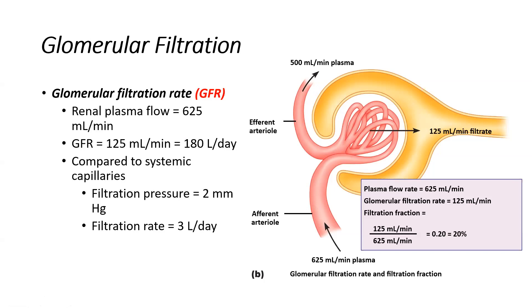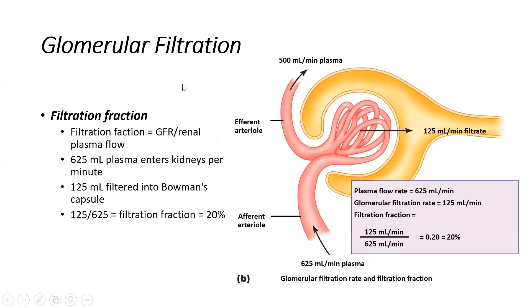From that understanding, we can speak about our filtration fraction. We want to compare that first to what our systemic capillaries look like. In our systemic capillaries, we had a net filtration pressure of 2 millimeters of mercury and a filtration rate of about 3 liters per day — recalling the Starling forces from the cardiovascular system. Comparing that to the kidneys, we can see this is exponentially much larger, much more plasma is being filtered, which really speaks to the efficiency of the kidneys.